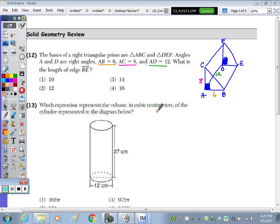Okay, so at number one, I have the right triangular prism to the right. Angles A and D are right angles with AB equal to 6, AC equal to 8, and AD equal to 12. What is the length of edge BE?